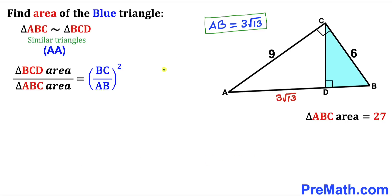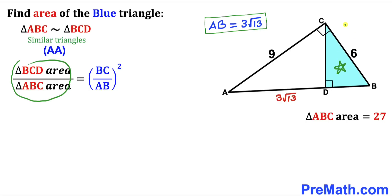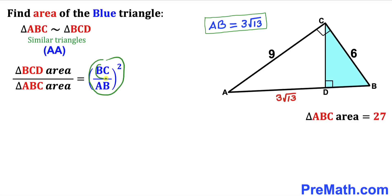So therefore we are going to apply that theorem to triangles ABC and BCD, since they are similar triangles. According to the theorem, the ratio of the area of triangle BCD to the area of triangle ABC equals the square of the ratio of side BC to side AB. In our case BC is 6 units and AB is 3√13.